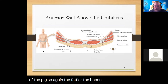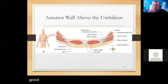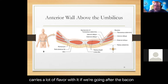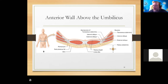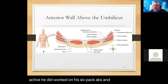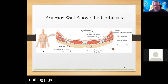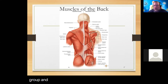Bacon is actually the four abdominal muscles of the pig. If there's a lot of white fat in between, that pig probably sat around and didn't do much. Sometimes fatty bacon is good for flavoring soups. If you're going after protein, you want a lot of red when buying your bacon - that means the pig was more active. Free-range pigs will have more protein and more red muscle tissue, while sedentary pigs will have more fat in their abdominal group.